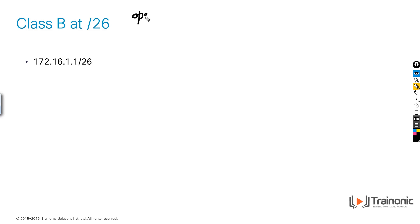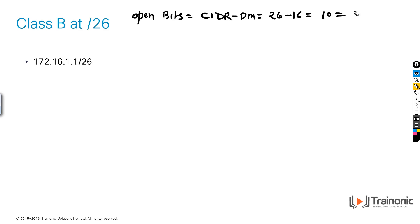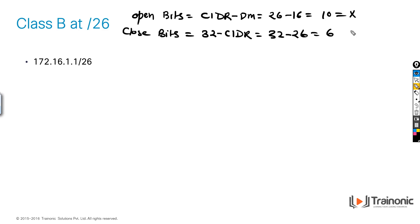First of all, get open bits. The formula is CIDR minus default mask: 26 minus 16 is equal to 10 — that is the X value. Then close bits formula is 32 minus CIDR: 32 minus 26 is equal to 6 — that is the Y value.